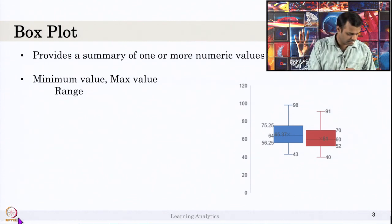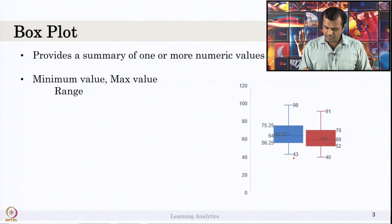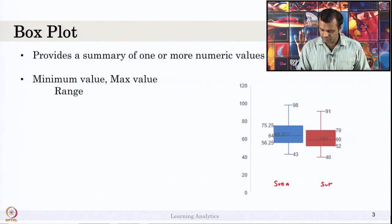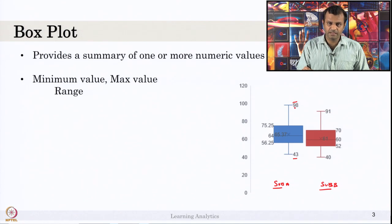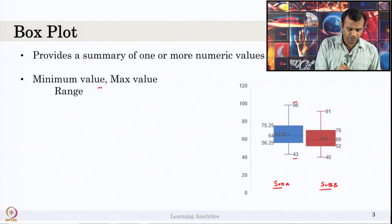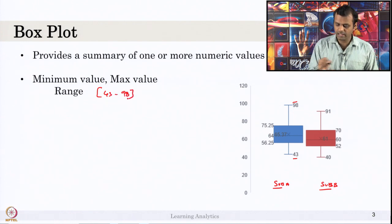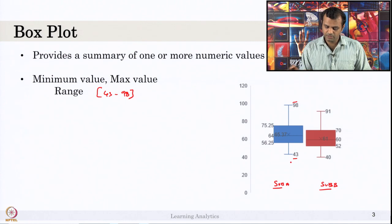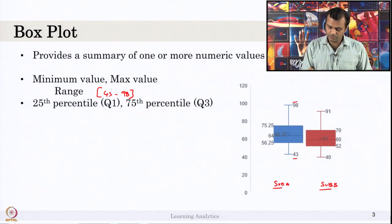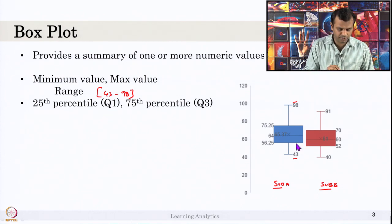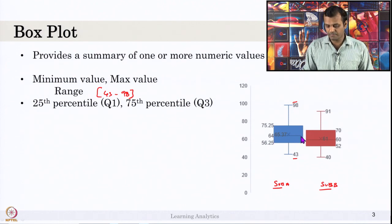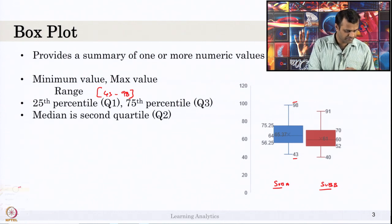Here there is a minimum value. This color indicates marks in subject A and this indicates marks in subject B. There is a minimum value of 43 and a maximum value of 98, so the range is 43 to 98 — that is the range of marks from the students' performance. And you see there is a 25th percentile that is Q1, and this is the 75th percentile, and the median is the 50th percentile.